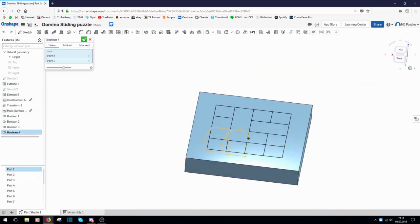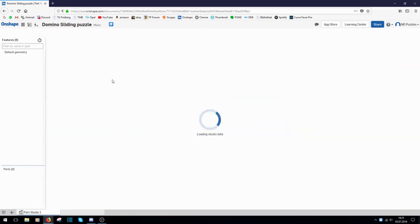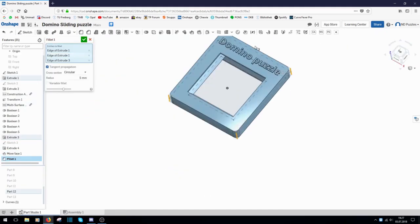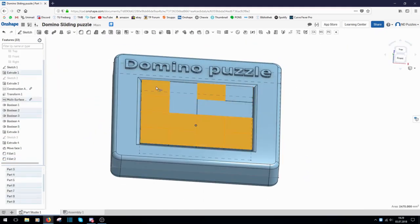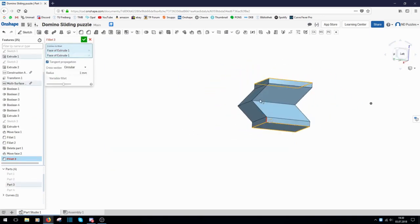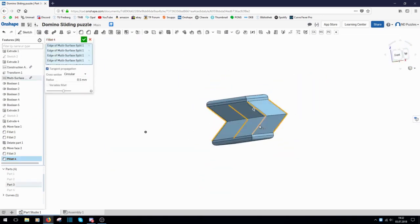Then I started to work on each piece individually by adding clearances and fillets to make the puzzle printable as just one piece. I also added a fancy name tag just like I did on the infinity loop puzzle.